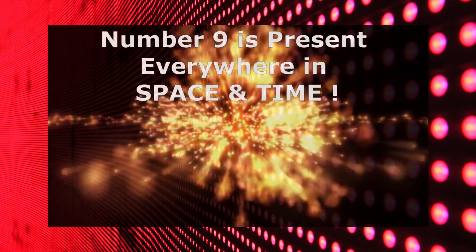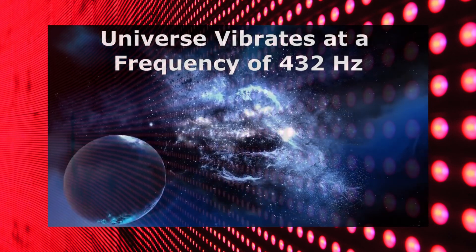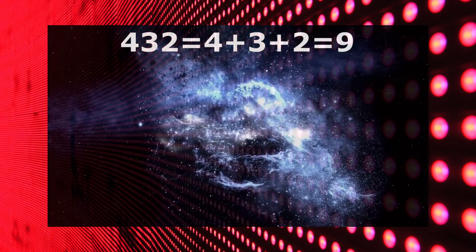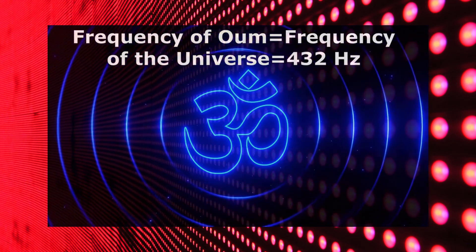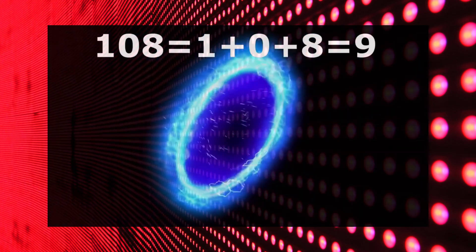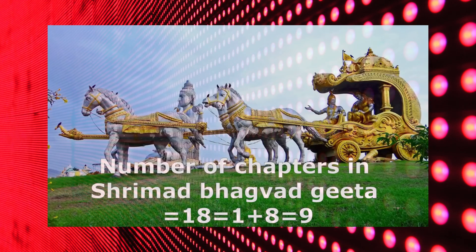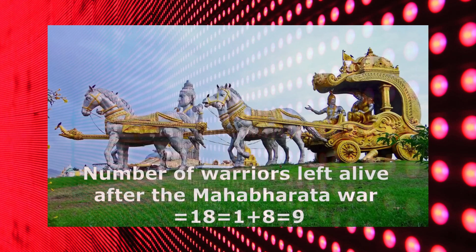It proves that number 9 is present everywhere in space and time. If we talk about Hindu religion, we will find number 9 at different places. Researchers have found that our universe vibrates at a frequency of 432 Hz, which also reduces to 9. The well-known symbol of Om, on pronouncing correctly, produces a frequency of 432 Hz — the frequency at which the universe vibrates. The shape of the Om symbol appears to be a combination of 3, 6 and 9 with number 9 at the top. A sacred number in Hinduism, 108, reduces to 9. The number of chapters in Srimad Bhagavad Gita is 18, the Mahabharata war lasted for 18 days, and the number of warriors left alive after the war was 18 — all reducing to 9.